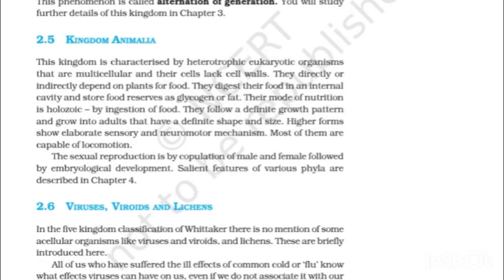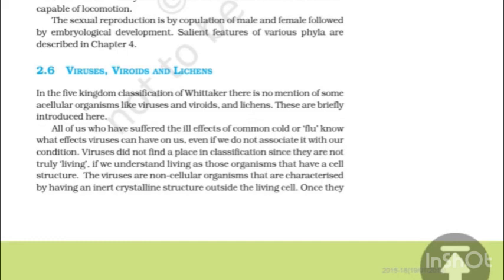2.5 Kingdom Animalia. This kingdom is characterized by heterotrophic eukaryotic organisms that are multicellular and whose cells lack cell walls. They directly or indirectly depend on plants for food. They digest their food in an internal cavity and store food reserves as glycogen or fat. Their mode of nutrition is holozoic by ingestion of food. They follow a definite growth pattern and grow into adults that have a definite shape and size. Higher forms show elaborate sensory and neuromotor mechanisms. Most of them are capable of locomotion. Sexual reproduction is by copulation of male and female followed by embryological development.